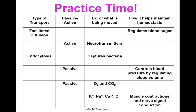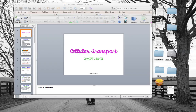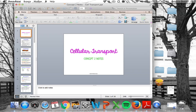Last is the summary chart covering all six types of transport. Pause the video and use the clues provided to fill in what goes where and think about how each type helps maintain homeostasis. And that's concept two on cellular transport.